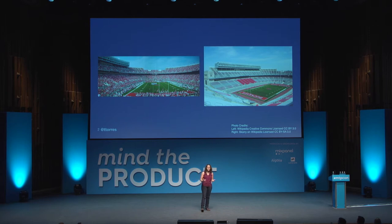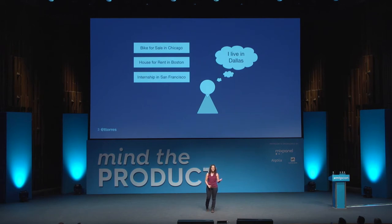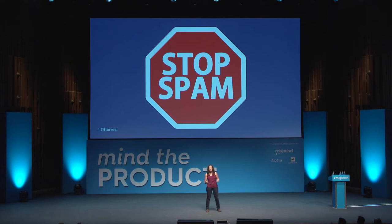This was exactly the type of engagement we were looking for. There was only one problem. We had alumni living in Dallas receiving emails about bikes for sale in Chicago, or houses for rent in Boston, or internships in San Francisco. We were effectively making it easy for people to spam their entire alumni network. And we knew that if we wanted to increase engagement, we had to reduce the number of unwanted emails that people were receiving.